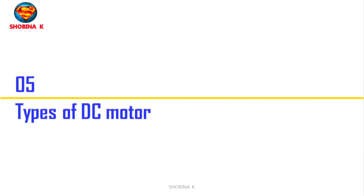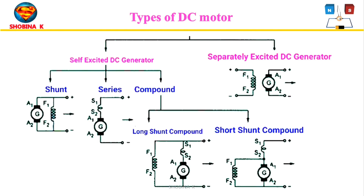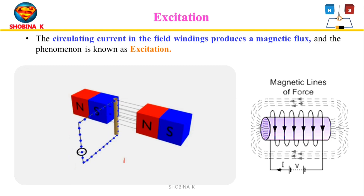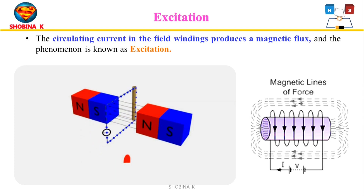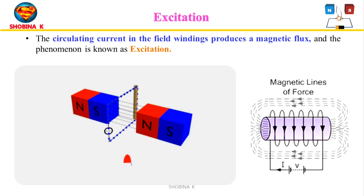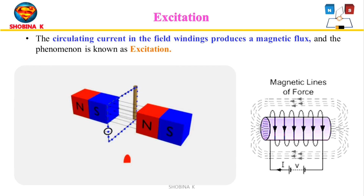DC motors have a wide range of applications ranging from electric shavers to automobiles. The DC motors are classified into different types based on field winding connections to the armature as self-excited DC motor and separately-excited DC motor. Excitation means the circulating current in the field winding produces a magnetic flux — that is, passing current in the field winding of the DC motor to generate magnetic flux in it. The field winding is also known as the exciting coil or winding.